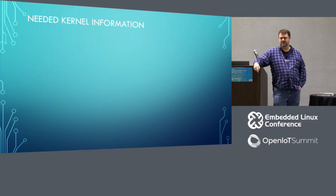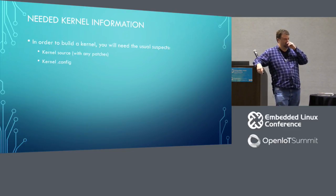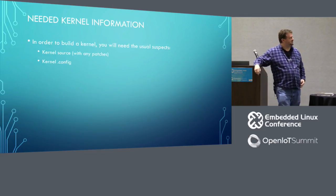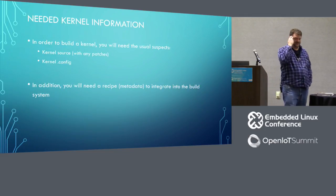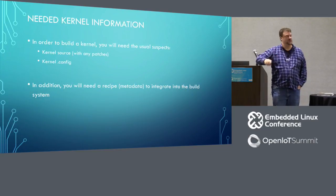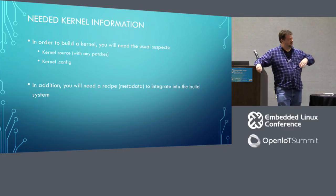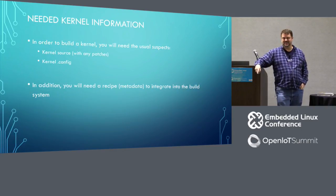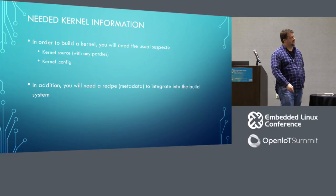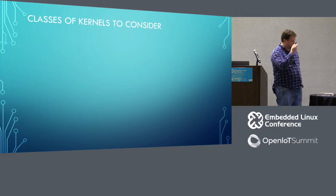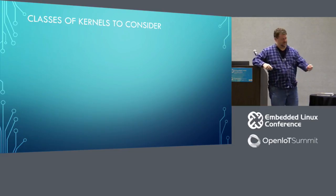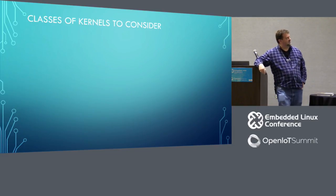For kernel development, you're going to need some pretty basic things: kernel source and a kernel config. In order to make it play nicely inside the Yocto Project, you'll also need some metadata or a recipe. I'm assuming everybody in the room has at least passing familiarity with the Yocto Project and knows about kernel development. We're trying to put things together, so for the purposes of this talk we need to consider different types of kernels.